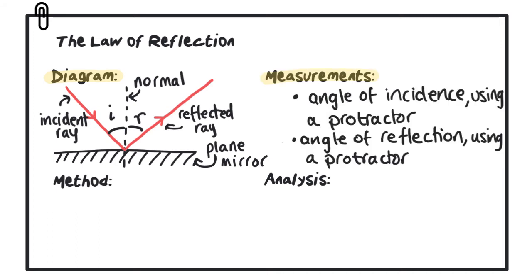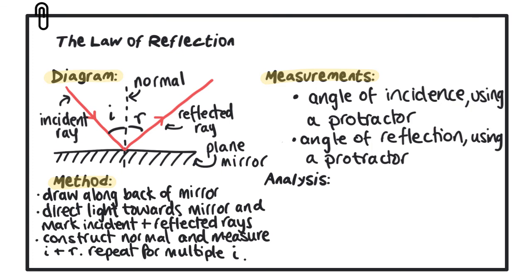The measurements that we take during this experiment are the angles of incidence and the angle of reflection, and both of those are measured using a protractor. We obtain those results by drawing along the back of a plane mirror, directing the light towards the mirror and then marking on the incident and reflected rays, constructing the normal and measuring the angles of incidence and the angles of reflection. We then repeat that process for multiple values of i.